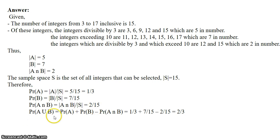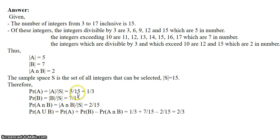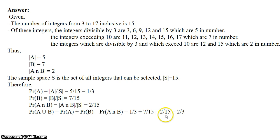For probability of A union B, we use the addition theorem formula: P(A∪B) = P(A) + P(B) − P(A∩B). Substituting the values: P(A) = 1/3, P(B) = 7/15, and P(A∩B) = 2/15. When you evaluate all these values, you get 2/3 as the answer.